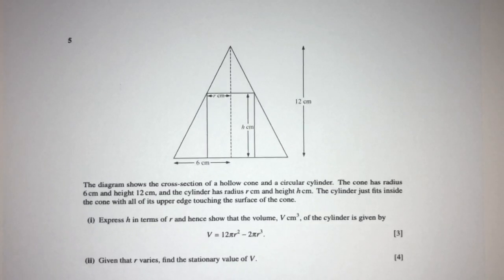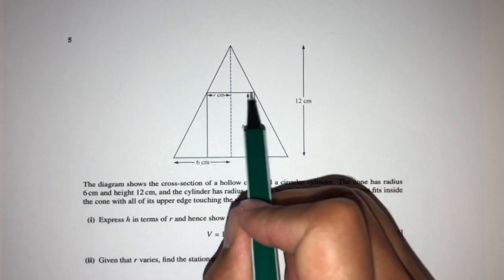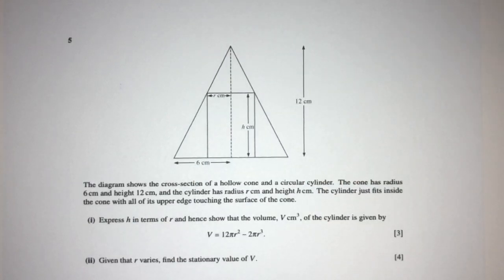Let's move on to the next question. The diagram shows a cross-section of a hollow cone and a circular cylinder. Here we have a cylinder and here we have a cone. That's a cross-section obviously.